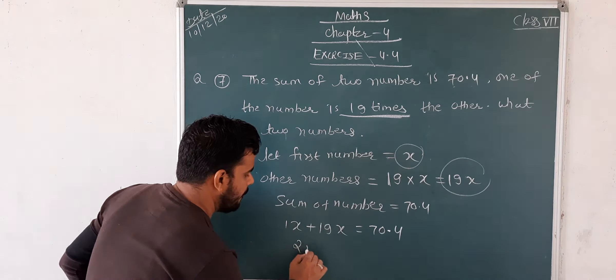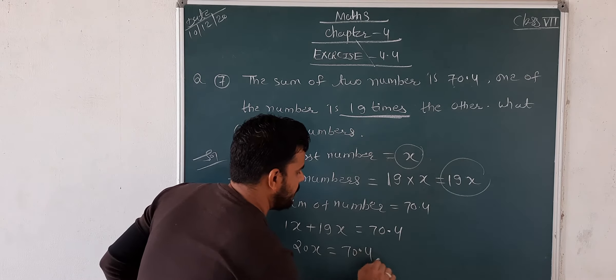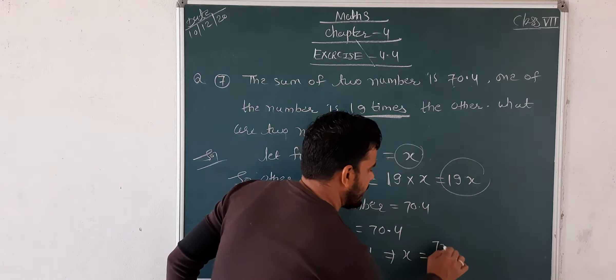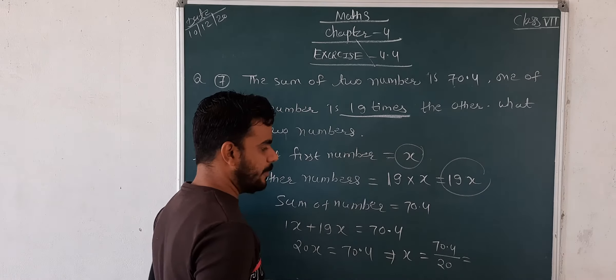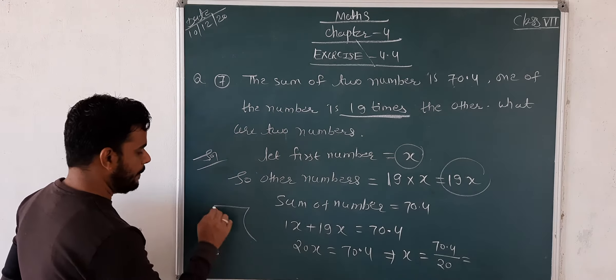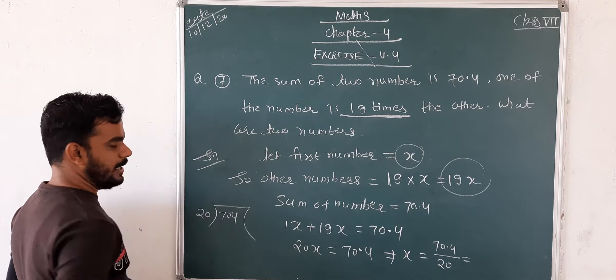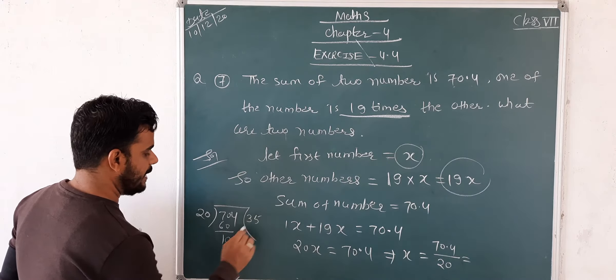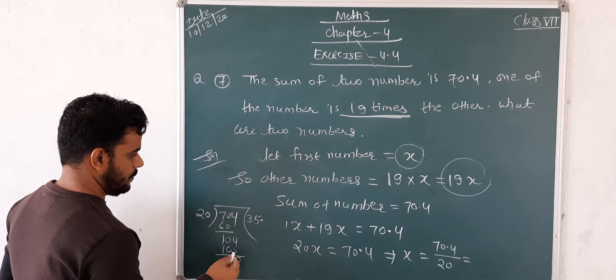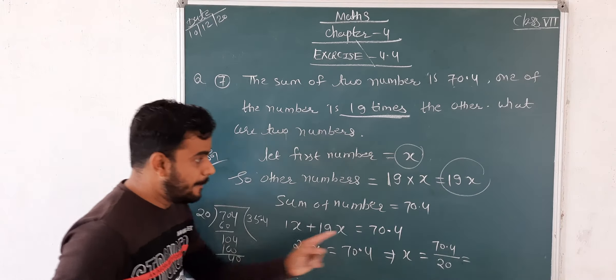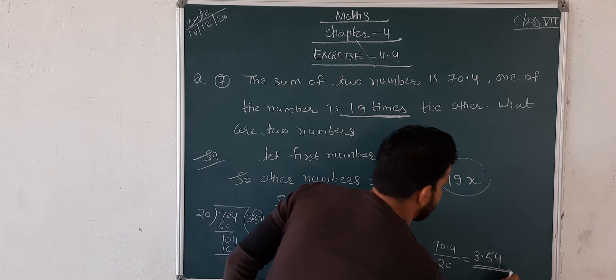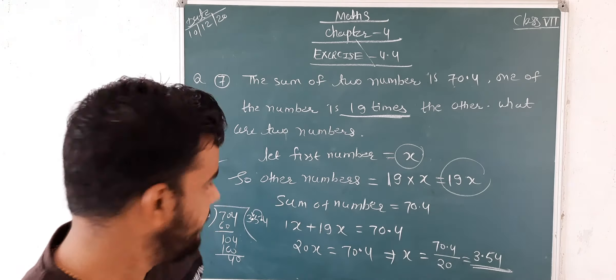Now the sum of the numbers: x plus 19x equals 70.4. x means 1x. So 1x plus 19x becomes 20x, which equals 70.4. Then 20 is in multiply, so it will change to divide: x equals 70.4 divided by 20. So the first number is 3.52.